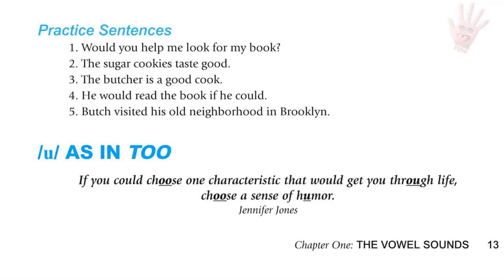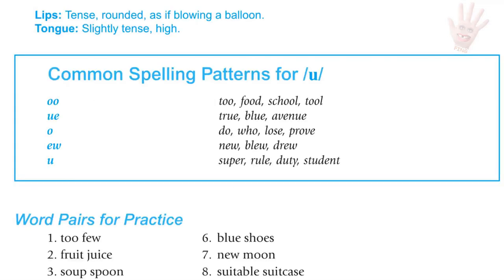OO as in too. For the OO sound, the lips are tense and rounded as if you're blowing a balloon, and the tongue is slightly tense and raised high. Common spelling patterns: double O as in too, food, school, tool; UE as in true, blue, avenue; O as in do, who, lose, prove; EW as in new, drew; and the letter U as in super, rule, duty, student.